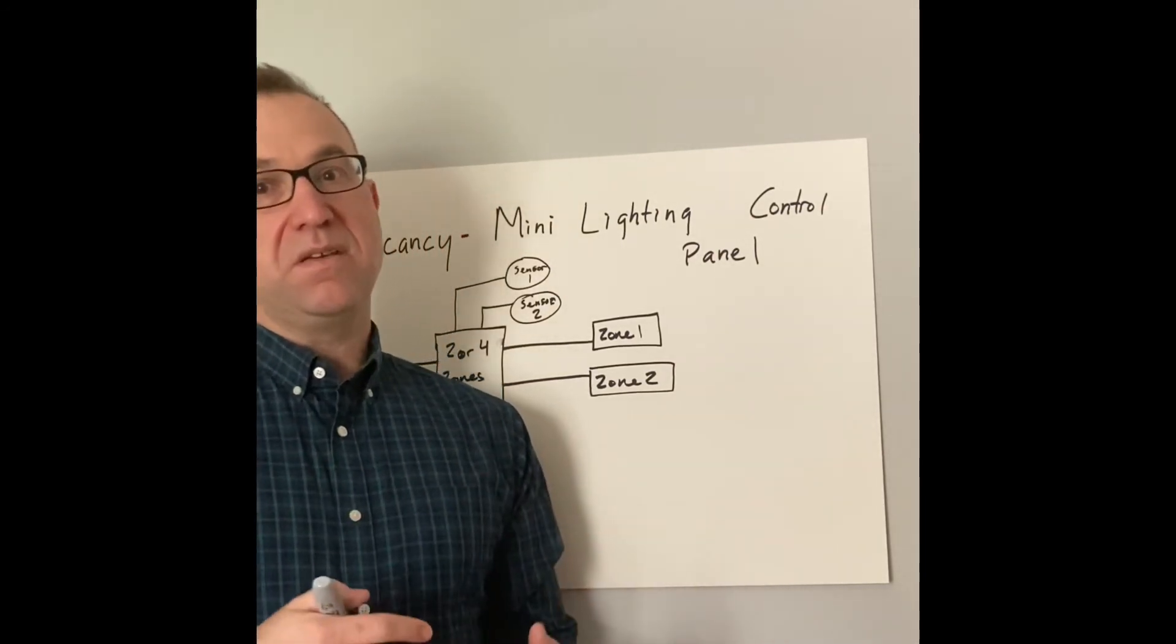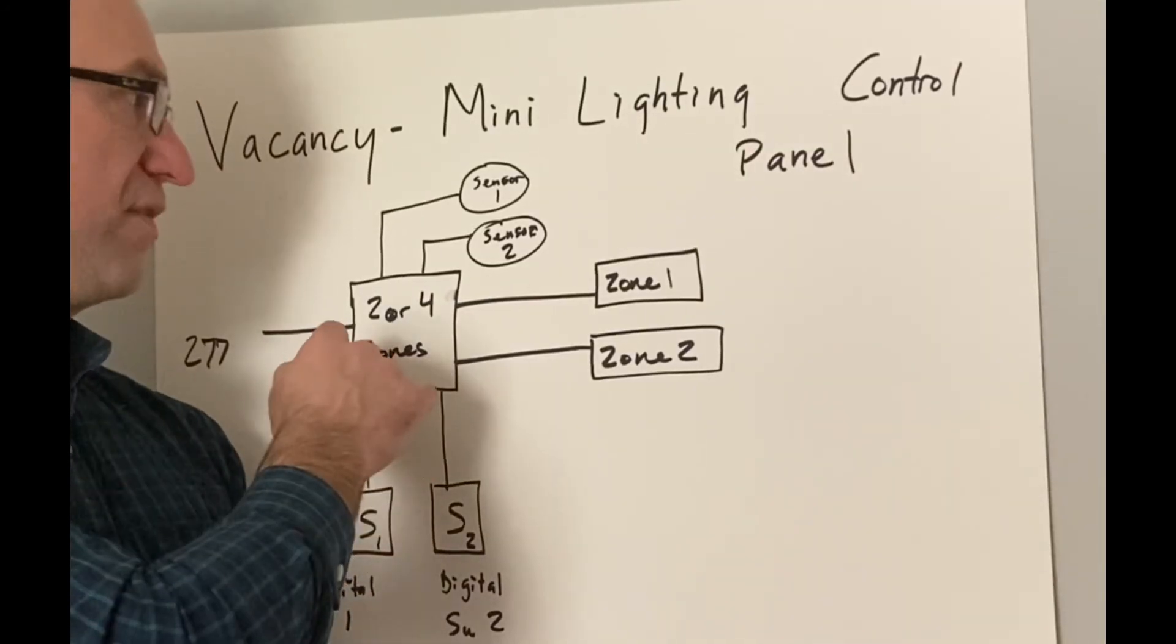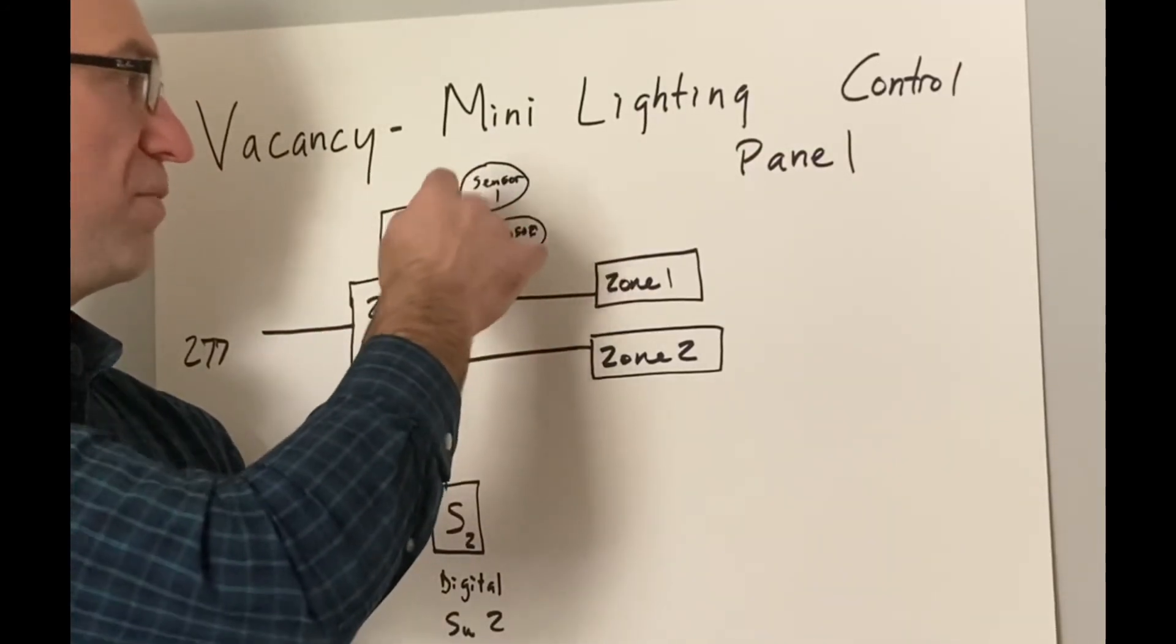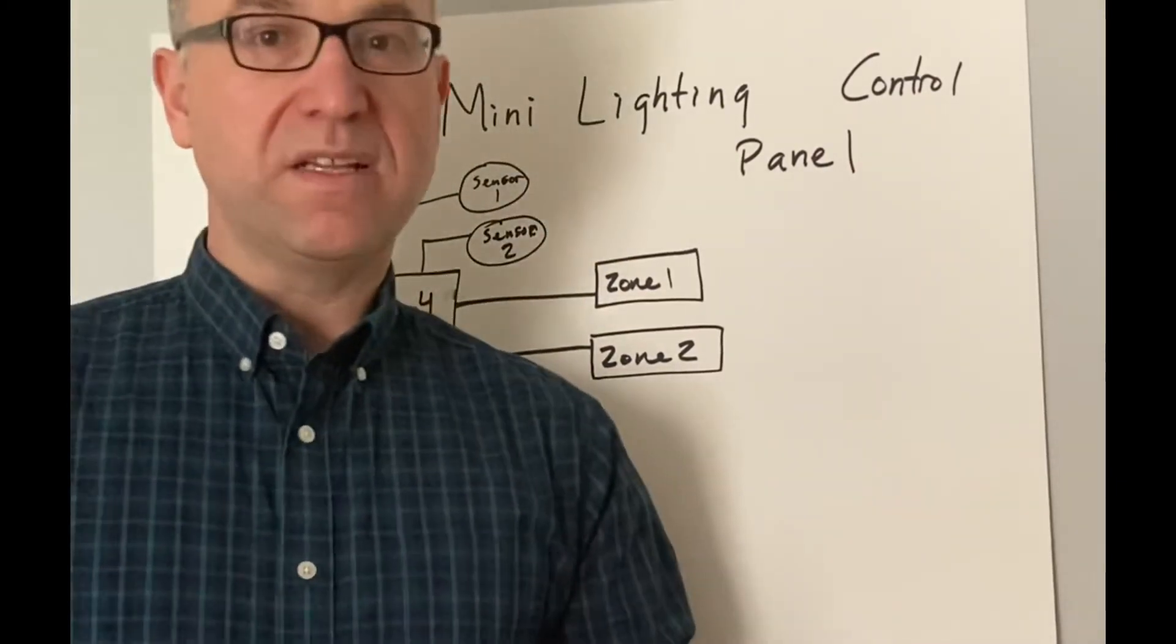So that mini relay panel is just going to simply take that signal when we have our off, those sensors report back vacant, shuts the lights off automatically. It's a simple way to do it. But again, understanding vacancy is really helpful. It saves energy and it's an important part of the energy code.